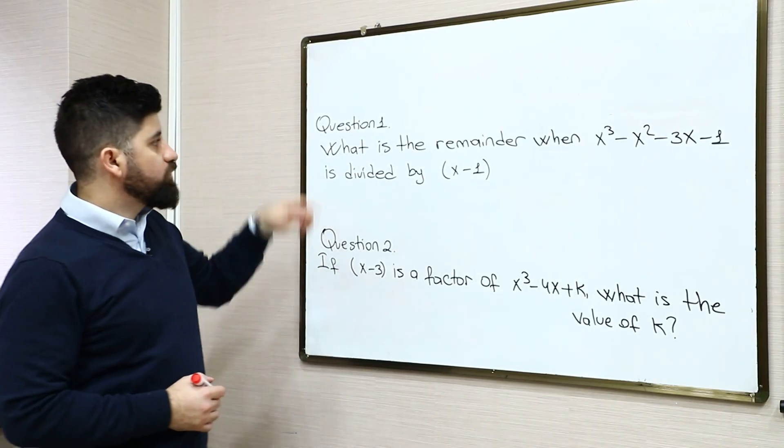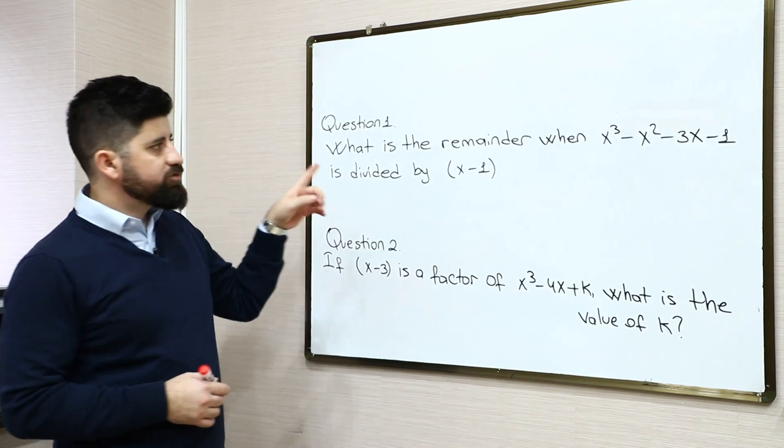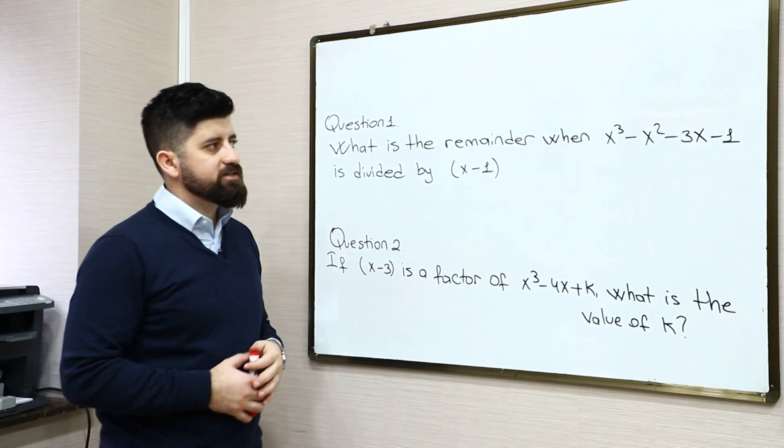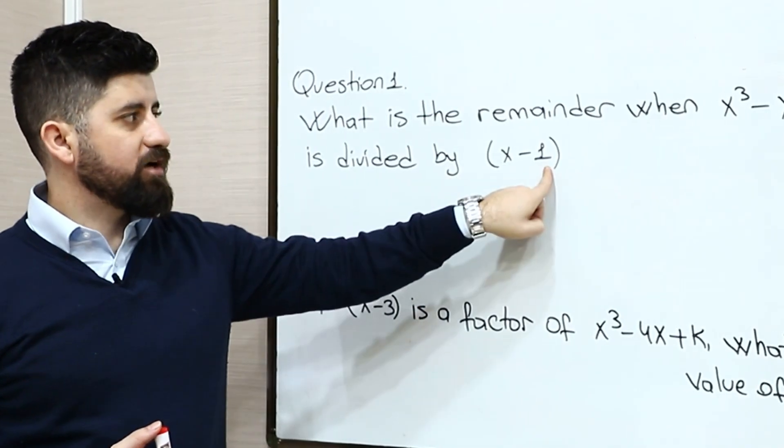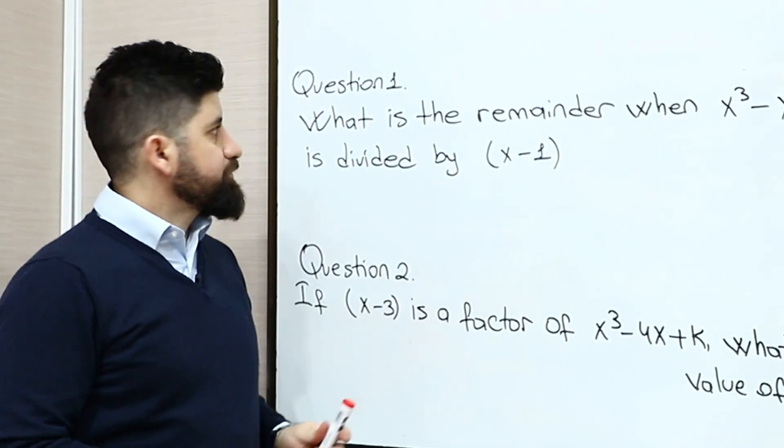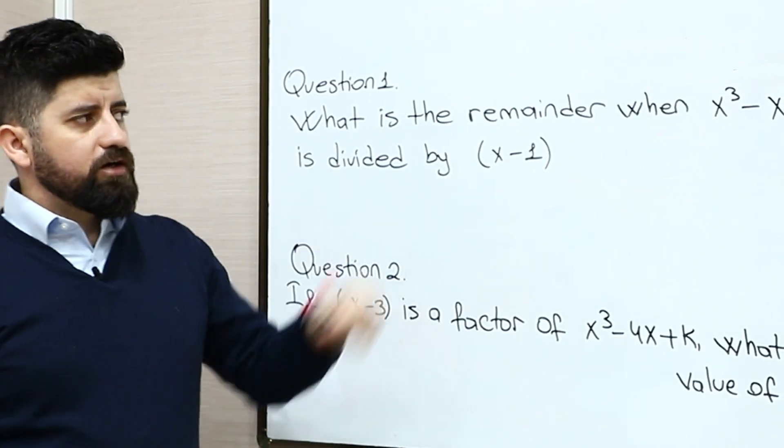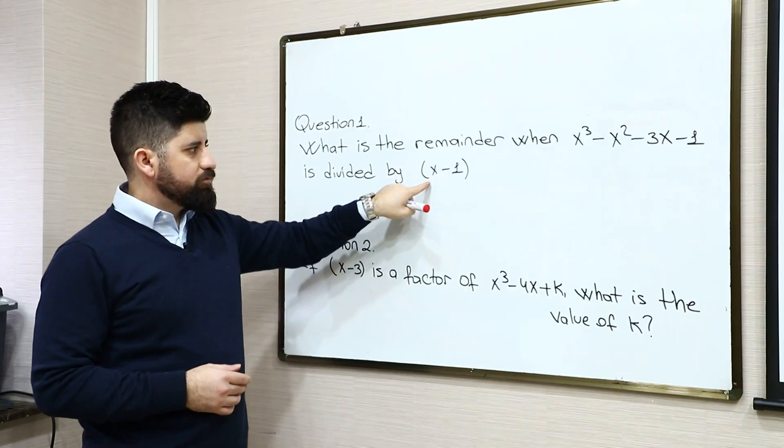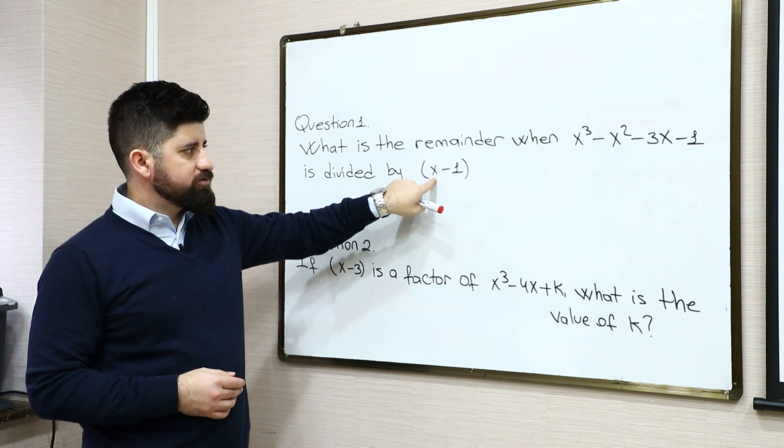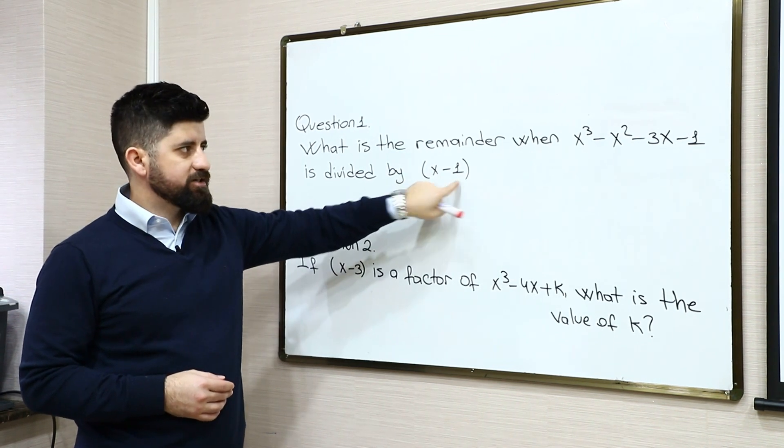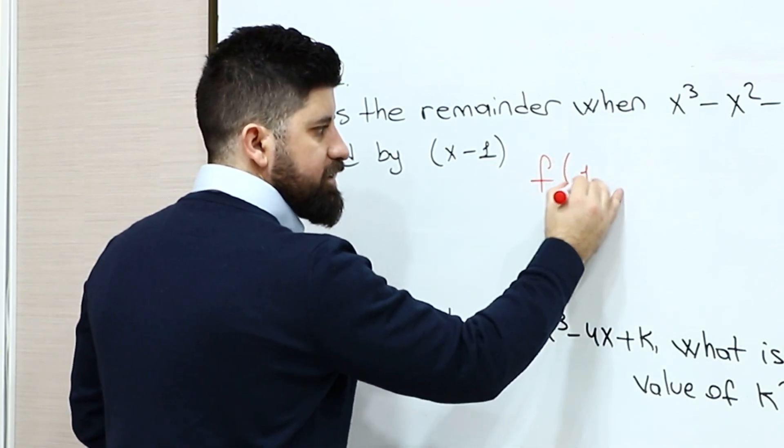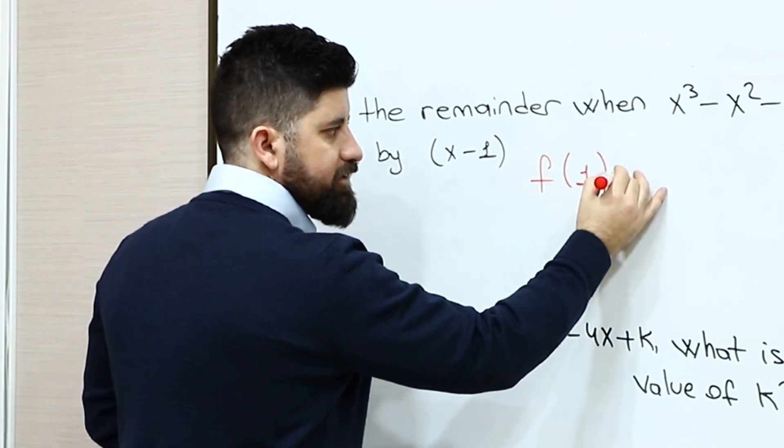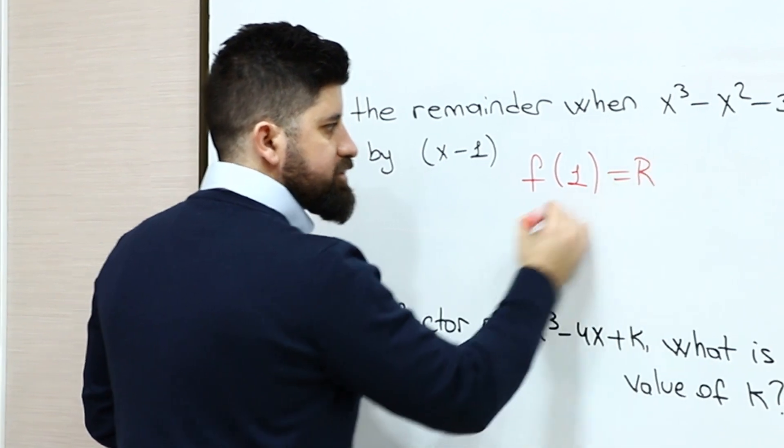Okay, in question 1, it states what is the remainder when x³ minus x² minus 3x minus 1 is divided by x minus 1. So as we remember, here x minus a is just x minus 1. It means that when I just plug this 1 in x, I will get the remainder.